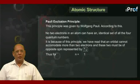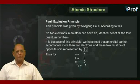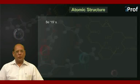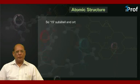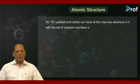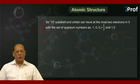Thus, for n equal to 1, l is equal to 0, m is also equal to 0. But ms will have two values, plus half and minus half. So 1s subshell and orbital can have at the most two electrons in it, with a set of quantum numbers as 1, 0, 0, plus half and 1, 0, 0, minus half.